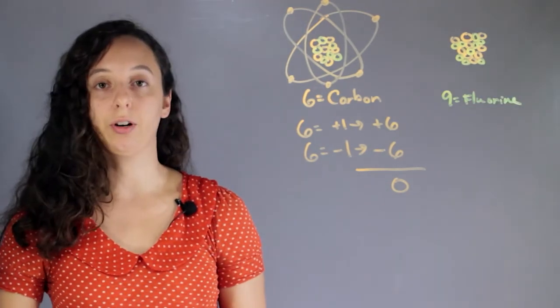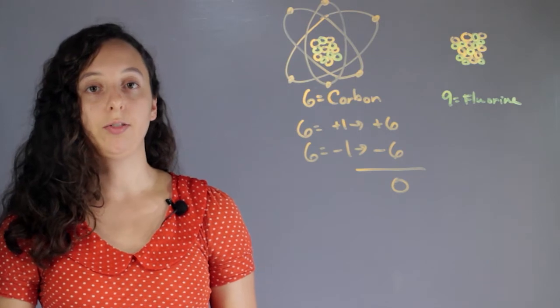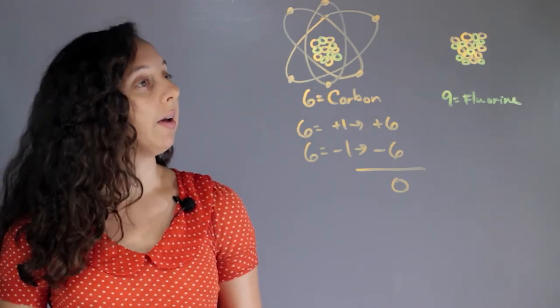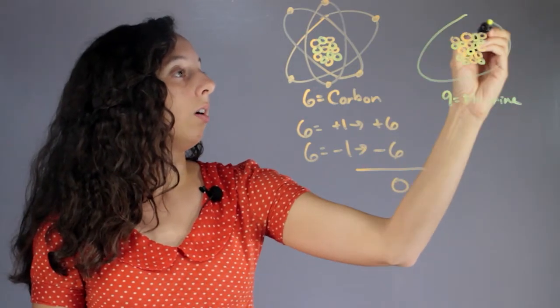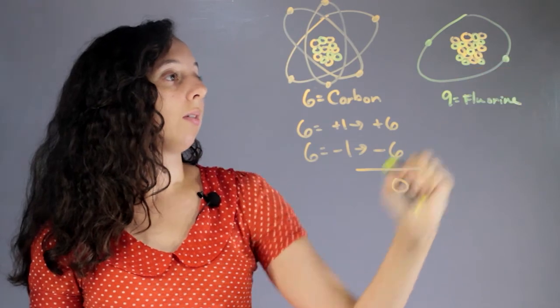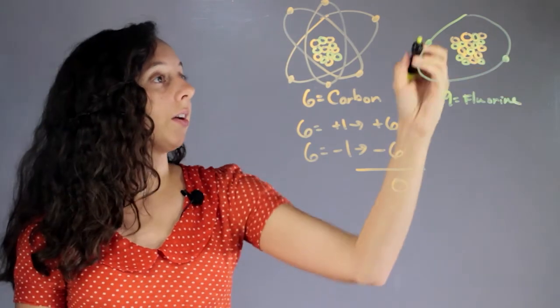Now, fluorine is really electronegative, and so it often tries to get other electrons. So, let's say this atom has succeeded, and now, on its first shell, it's going to have two electrons because it's full, and then on its next shell,